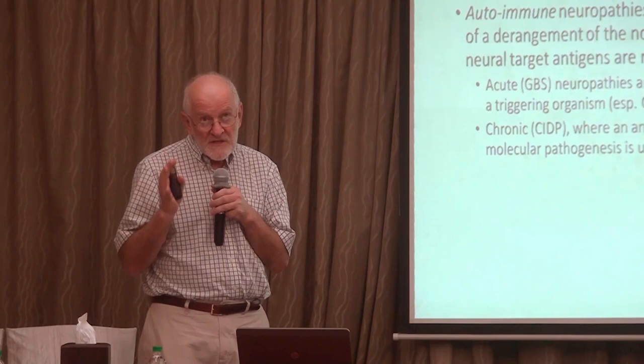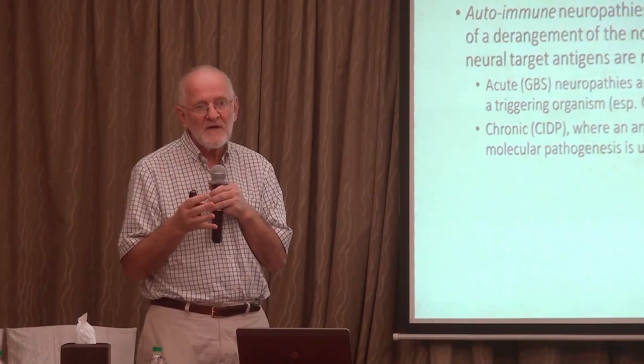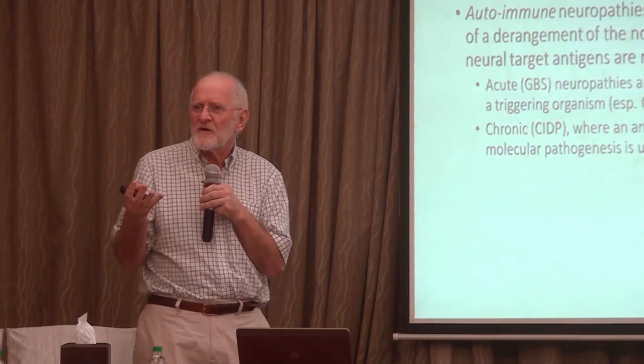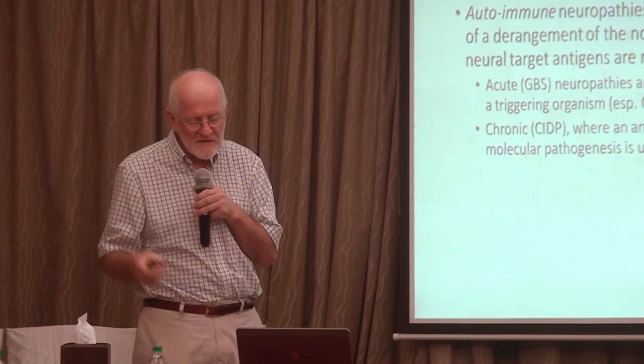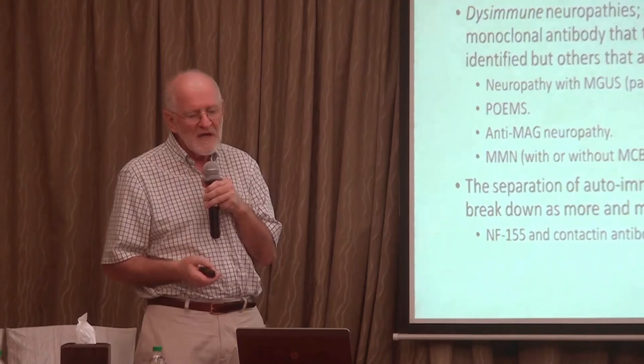CIDP is a chronic autoimmune neuropathy. We rarely identify an antecedent event, probably because it develops chronically — by the time the patient sees a physician, they can't really remember any triggering event. We know less about the molecular pathogenesis of CIDP compared to GBS.